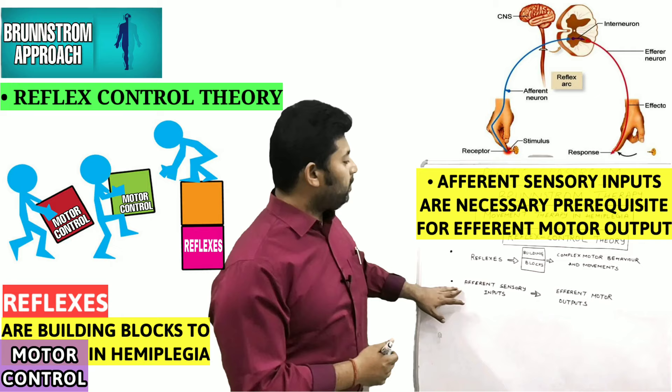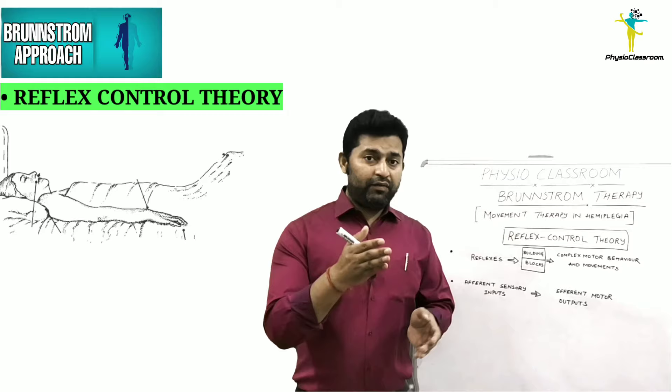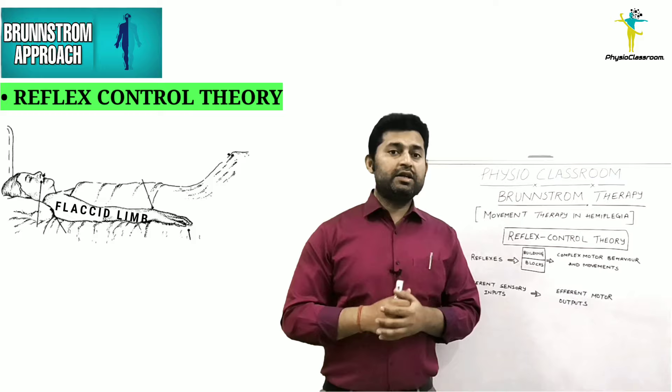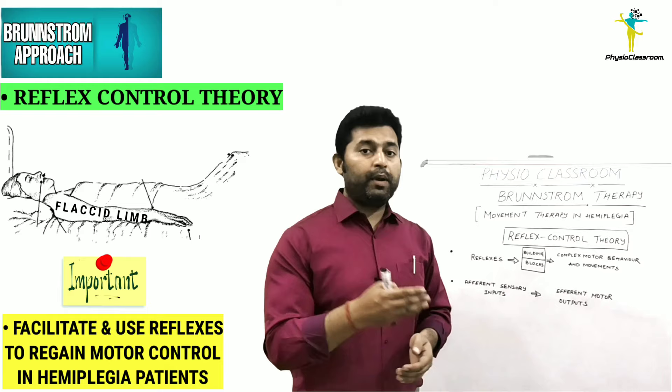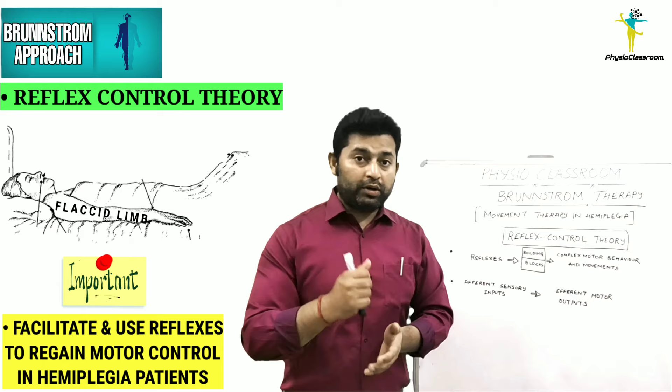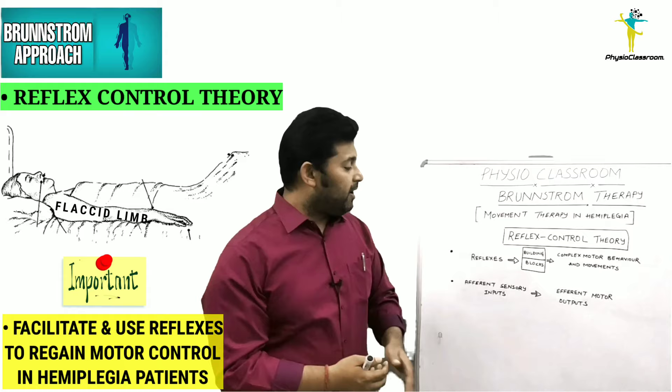Let's say we are seeing an acute hemiplegic patient on day one or day two, and the patient is in a flaccid state — there is no reflex activity and no movement. In such a situation, Brunnstrom therapy states that we should first utilize treatment techniques to facilitate reflexes on the paralyzed side, because only then will it be possible to gain movements or motor control.